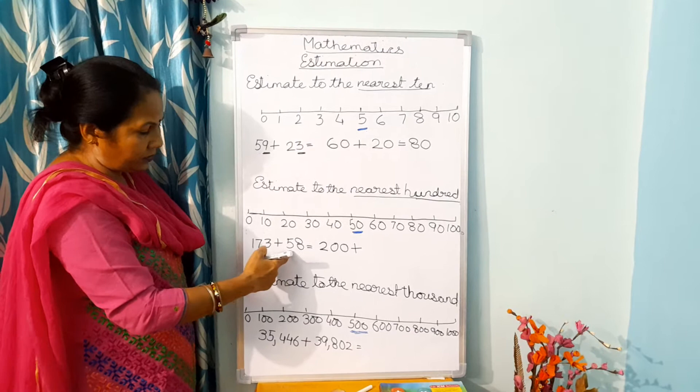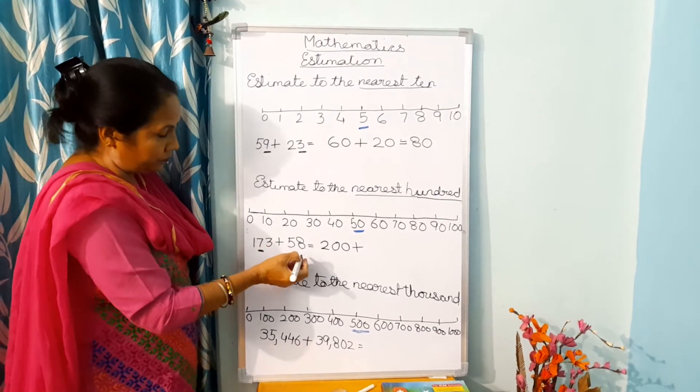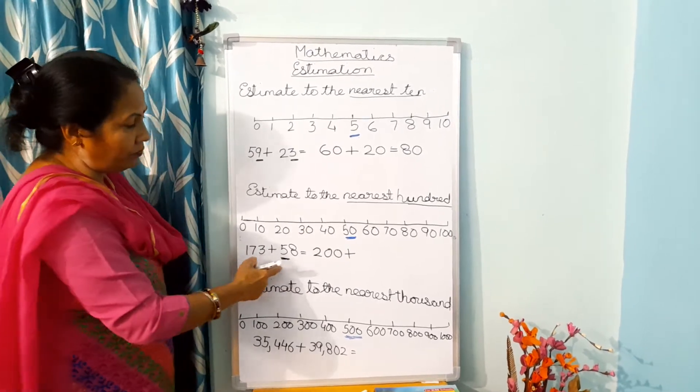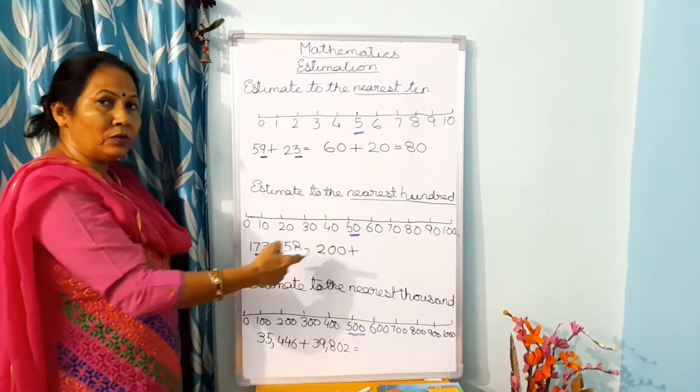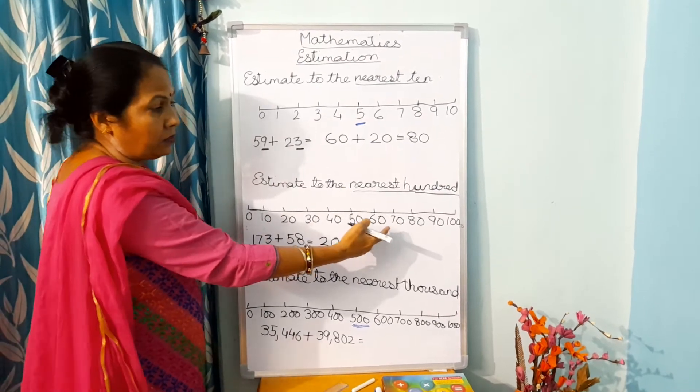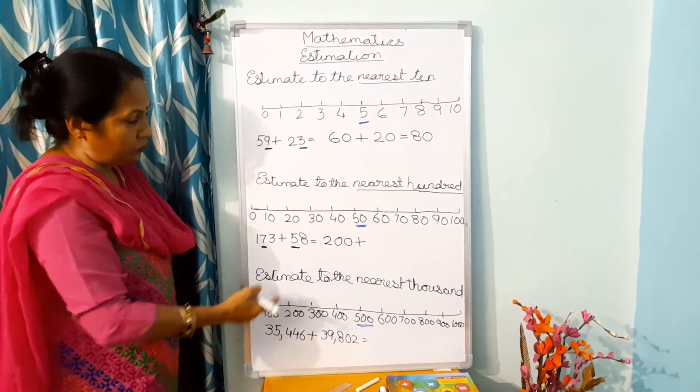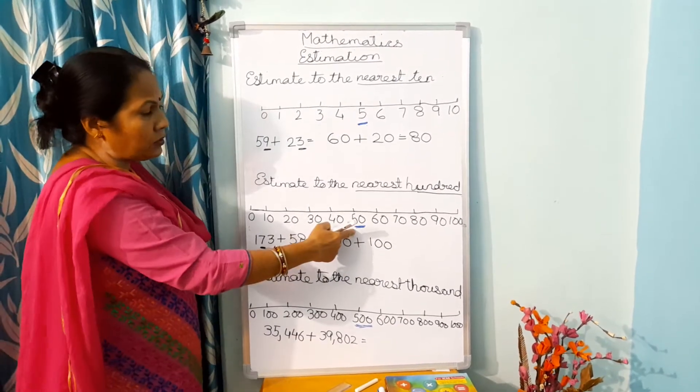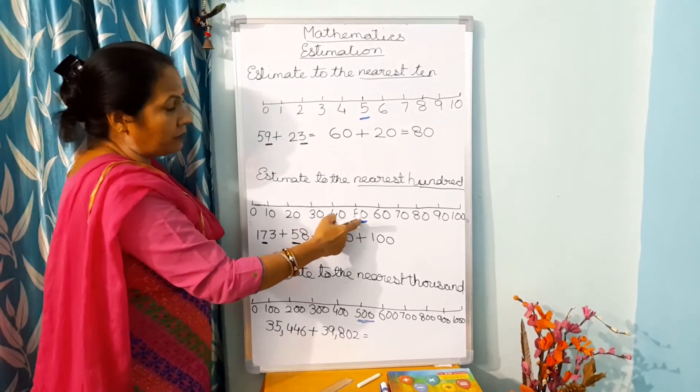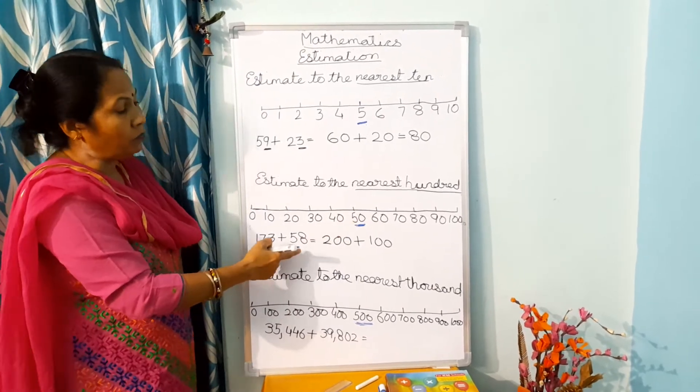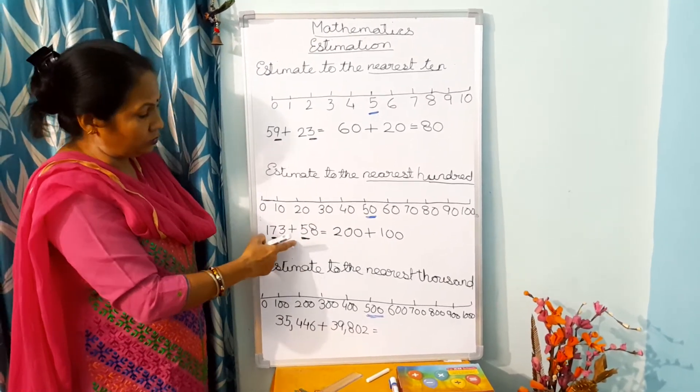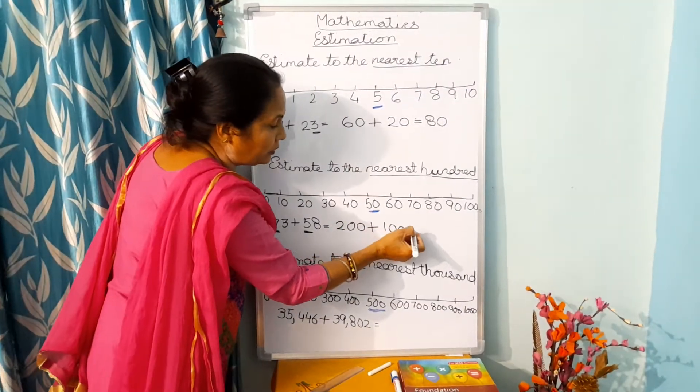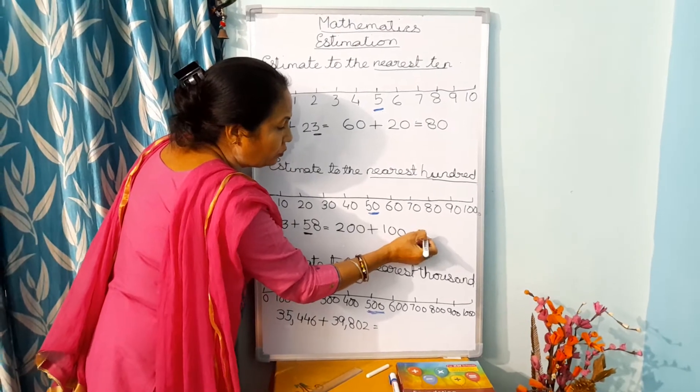Now here you will see that 58. Again you will see the 10's place. 5 is in the center, so this is again converted into 100. So this will become 100. Why? Because 58 comes after 50, so this is more than 50. So you will write here 100, and now you will add 200 plus 100 is equal to 300.